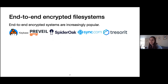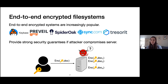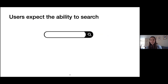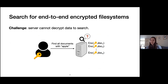Over the last few years, end-to-end encrypted systems have grown increasingly popular. One example is end-to-end encrypted file systems like Keybase, Tresorit, SpiderOak Sync, and Tresorit. These systems provide strong security guarantees even if the attacker compromises the server — the server just stores ciphertext and the client has the key to decrypt. However, users also expect the ability to search over their documents. This is a challenge: the server can't decrypt the data to search over its contents.